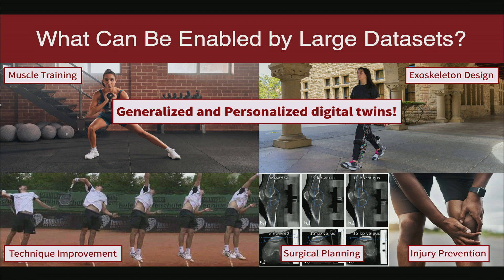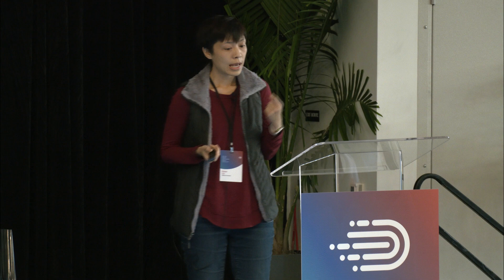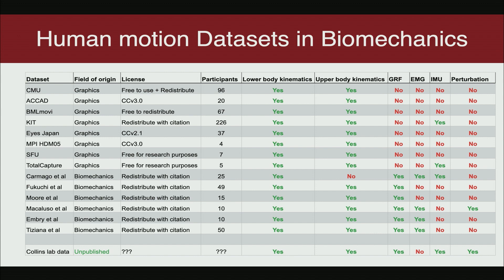So let's go back to reality. Datasets tailored to computer graphics have a decent amount of data but no dynamics information. Datasets in biomechanics have dynamic motion but two problems: a lot of data is collected but not shared publicly, and those private datasets tend to be small due to labor-intensive post-processing. Even for data that is shared, it tends to be highly heterogeneous — some datasets have upper body, some don't; some have EMG, IMU, or other signals, some don't.